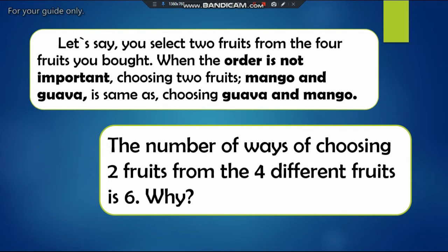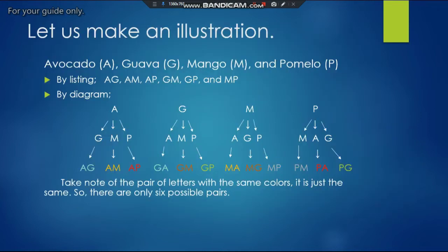I hope you have an idea. Let's see an illustration for the possible answers. Here we have avocado, guava, mango, and pomelo, each represented by their initial letters A, G, M, and P respectively.